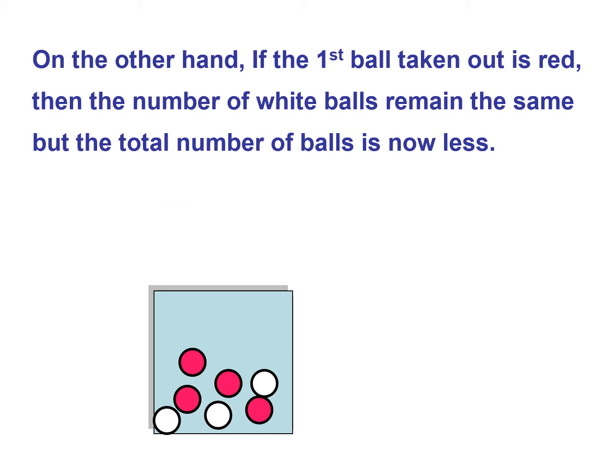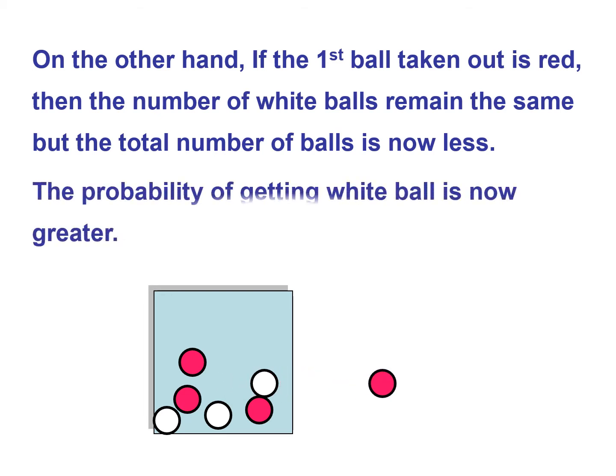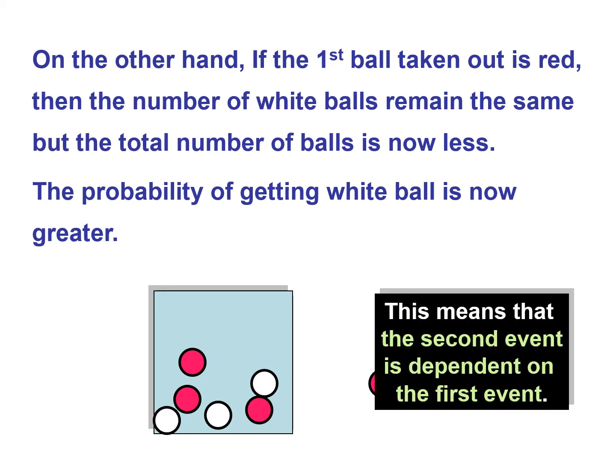On the other hand, if the first ball taken out is red, then the number of white balls remain the same, but the total number of balls is now less. The probability of getting a white ball is now greater. This means that the second event is dependent on the first event.